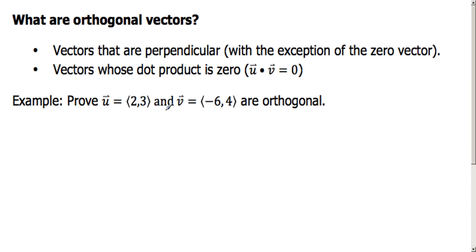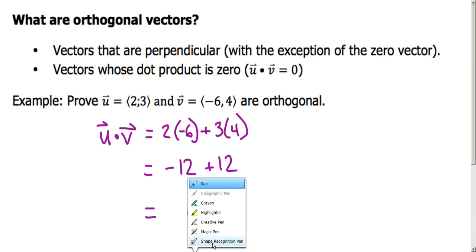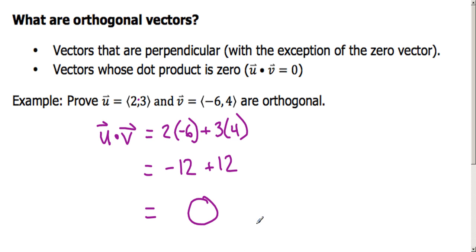So, vector u and vector v — we want to prove they are orthogonal. We do the dot product of u and v: we multiply our first two terms — two times negative six — and add that to the product of our second terms, three and four. Two times negative six is negative twelve; three times four is positive twelve. Any number plus its opposite is zero. So we've proven that these two vectors are indeed orthogonal.